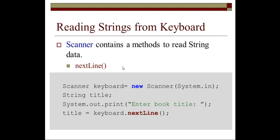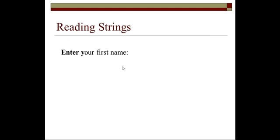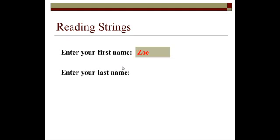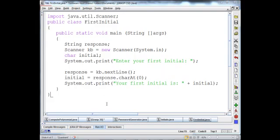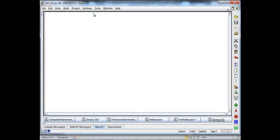Let's write a complete program. We want to prompt the user 'Please enter your first name' and read in the first name, then say 'Please enter your last name' and read the last name, and then we will display the first initials. In this instance, Zoe and Rambo, so the initials would be Z and R.